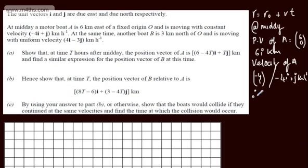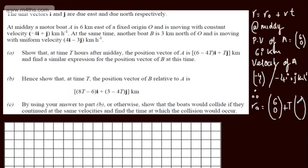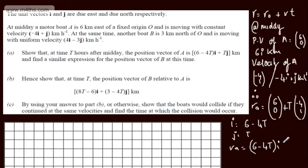Therefore, rA — the position of A at t hours after midday — can be given as (6, 0) plus t times (−4, 1). The i components give 6 minus 4t, and the j components give simply t. So we can write rA equals (6 minus 4t)i plus tj km.